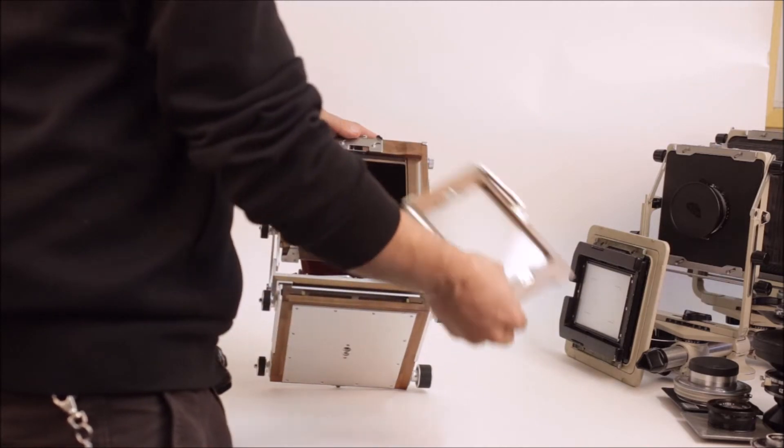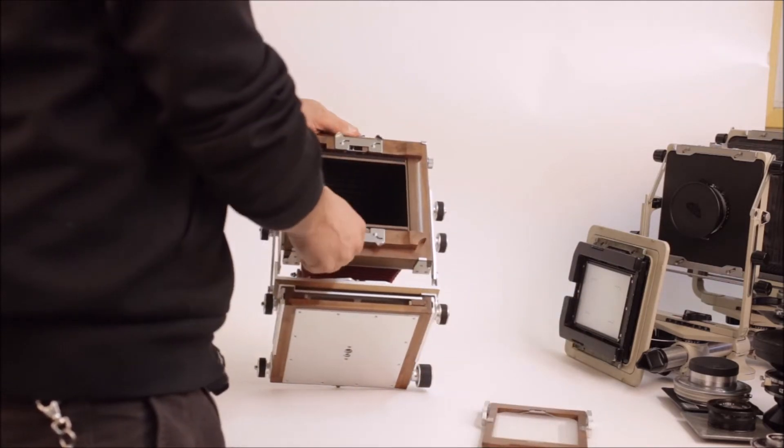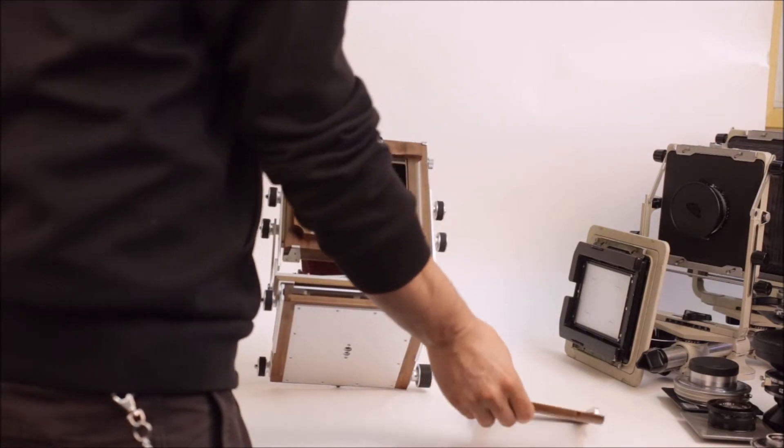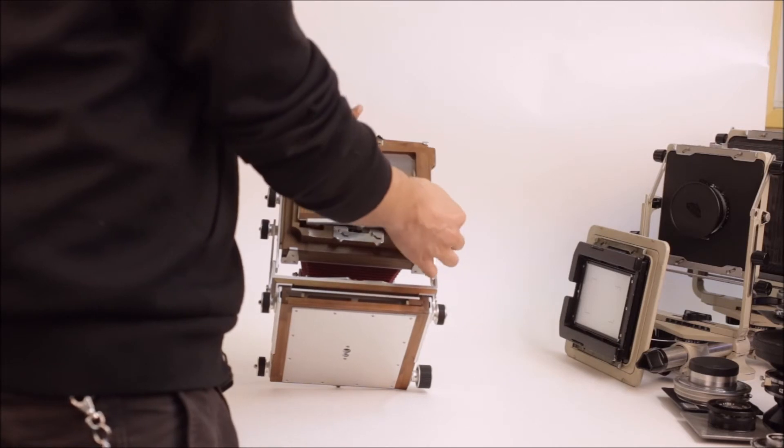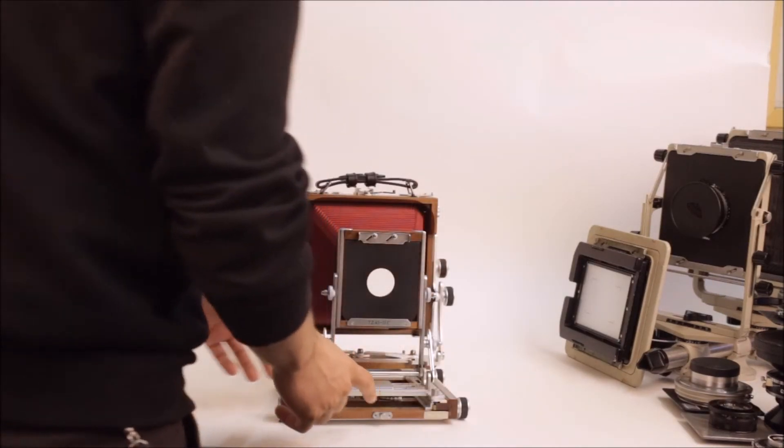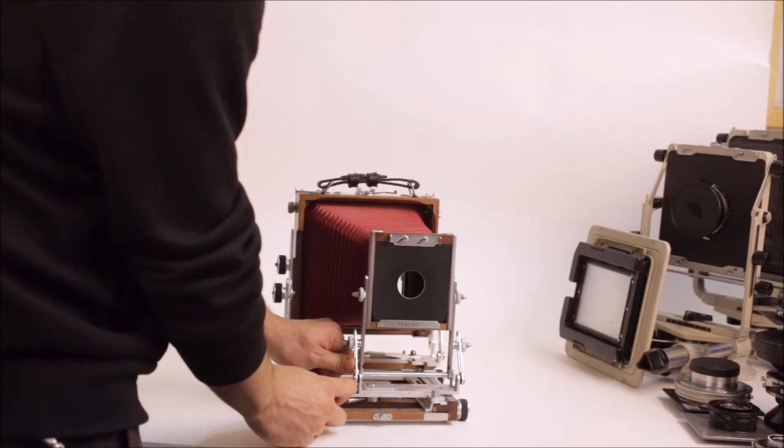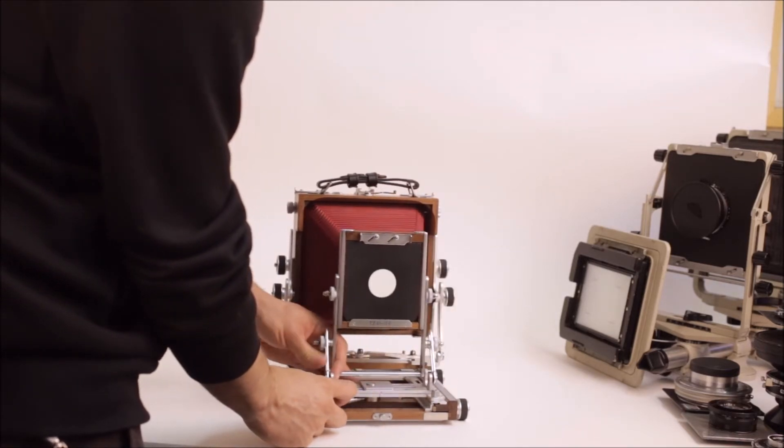And like all the Shenhao cameras, we have a graph lock back with very nice fitments, and a very nice piece of glass, and a good tension spring. One thing that we've seen as we checked out this camera just now is that this camera has a massive front shift. It's just around five centimeters in each direction.